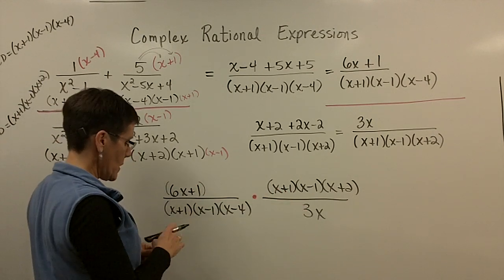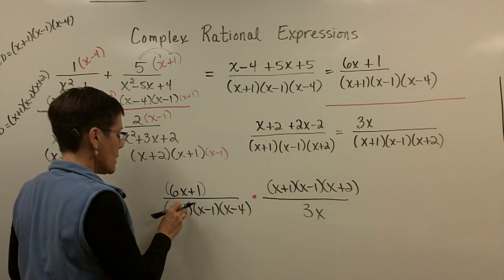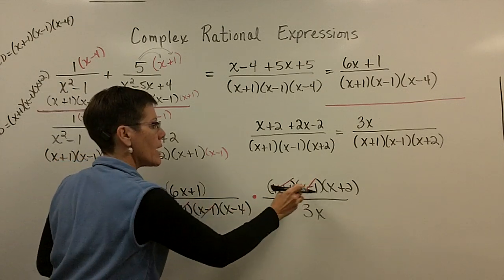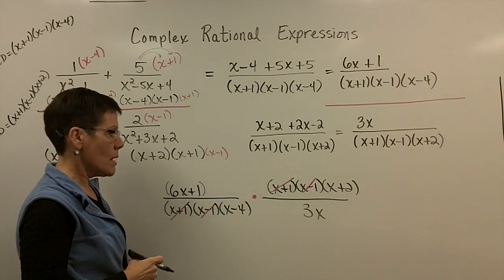So what I can reduce, though, is x plus 1 over x plus 1 is equal to 1. And x minus 1 over x minus 1 is equal to 1. But that's it. Nothing else can be crossed off.